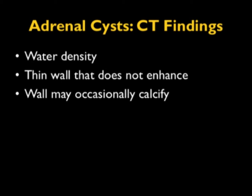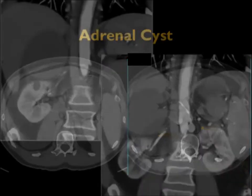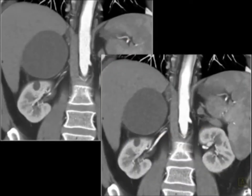Occasionally the wall will calcify, though that's most commonly in lymphangiomas as well as in old hematomas. In this example, when you look at that lesion with contrast or without, it's water density, well-defined, sitting above the right kidney, pushing on the liver — classic location for an adrenal mass. Being water density, this is a classic cyst.